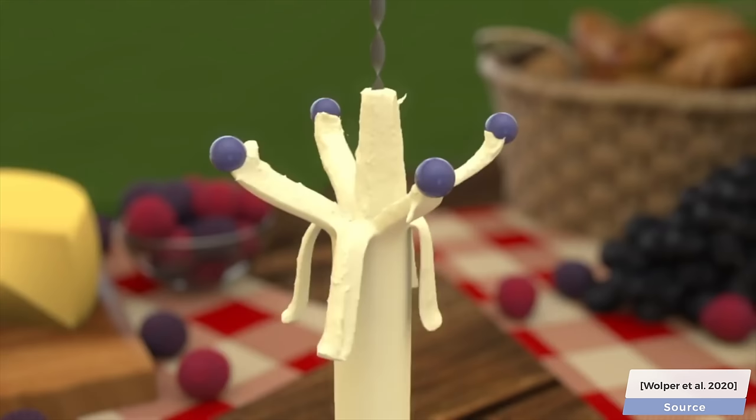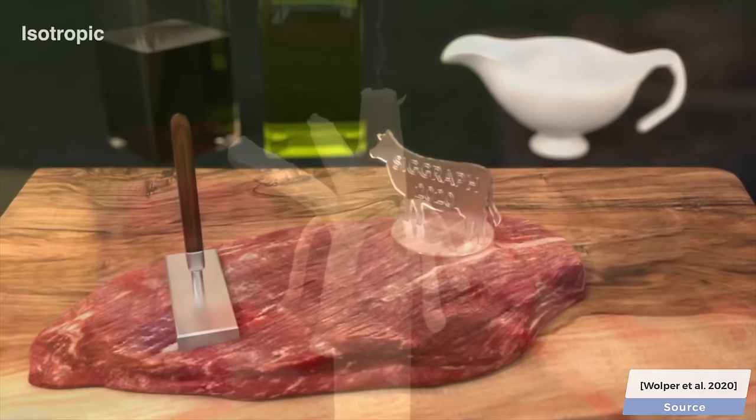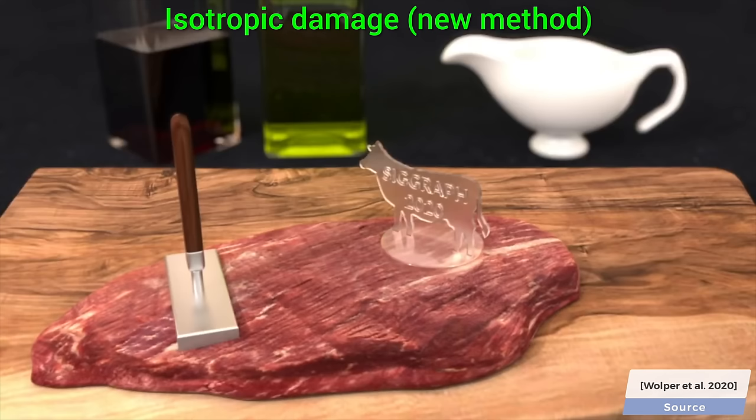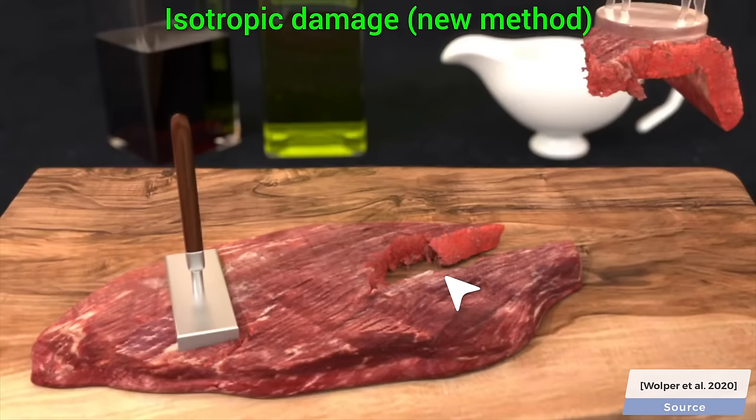And finally, if we tear this piece of meat apart, you see that it takes into consideration the location of the fibers, and the tearing takes place not in an arbitrary way, but much like in reality, it tears along the muscle fibers.